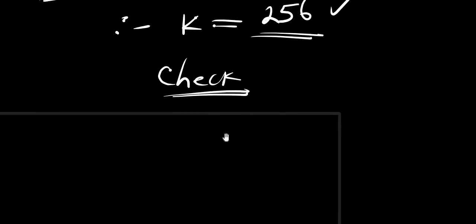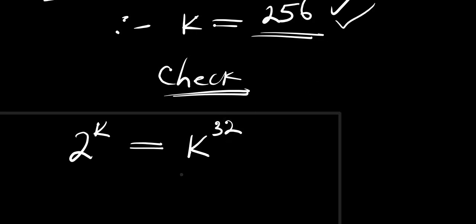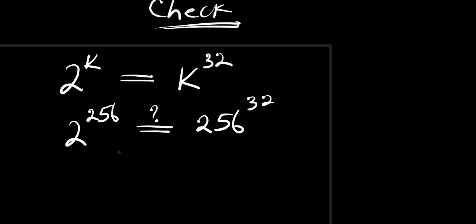At this point, the base on the left is 256 and the base on the right is k, and both exponents are 1 over their respective base. Comparing both sides, we simply have k equals 256. Now let's go ahead and check if this is correct. We record the original problem: 2 raised to the power of k equals k raised to the power of 32. With k equals 256, we need to verify that 2 raised to the power of 256 equals 256 raised to the power of 32.